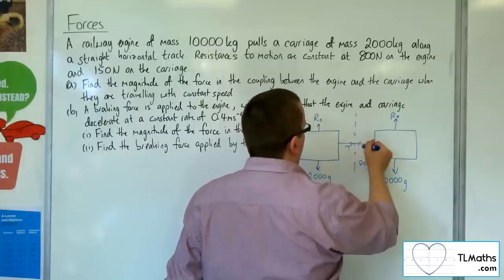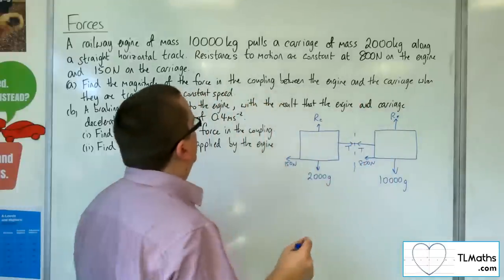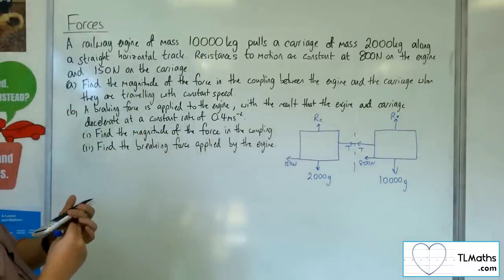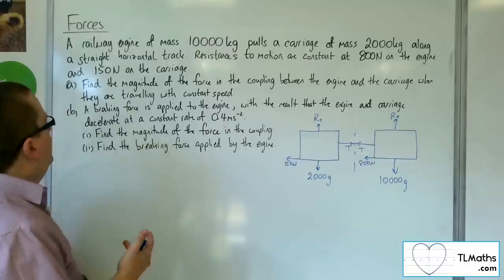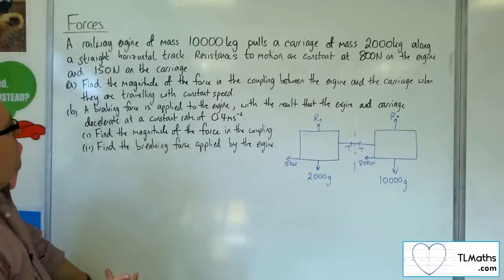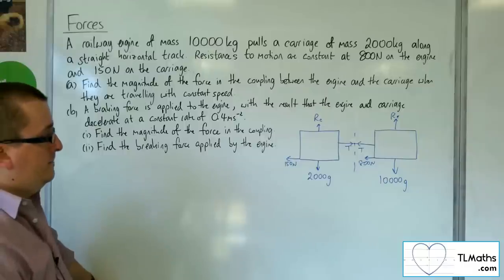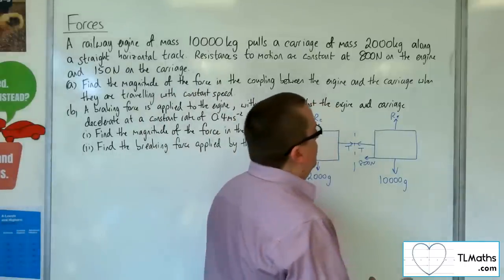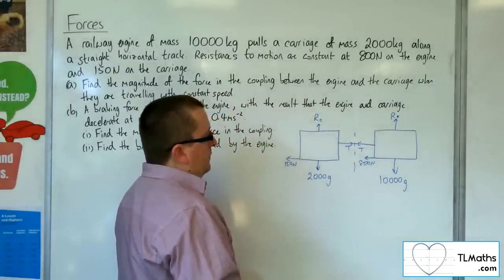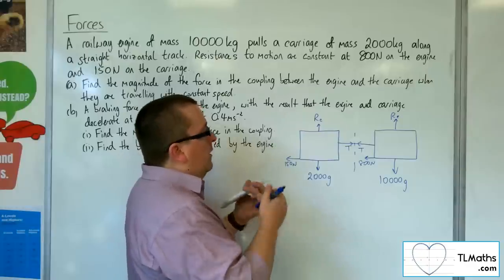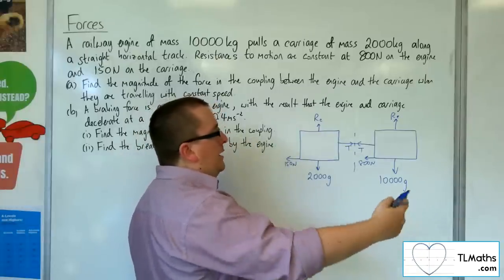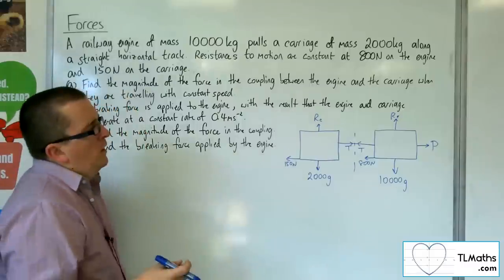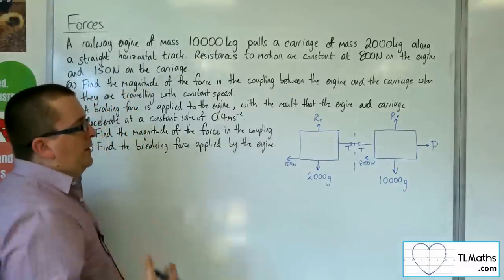We also have the tension T in the coupling. We need to find the magnitude of the force in the coupling when they are travelling at constant speed. Constant speed means acceleration is 0. There must be some propulsive force pulling the carriage along - we'll call that P. That's the engine pulling the trailer.